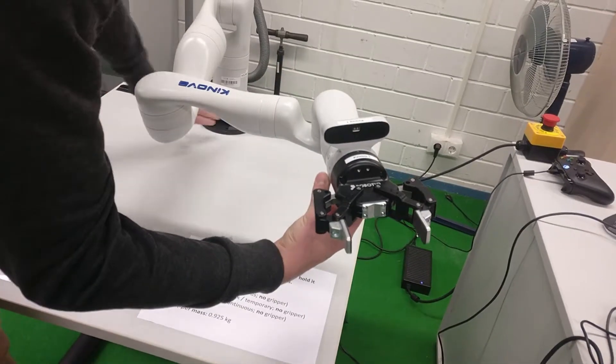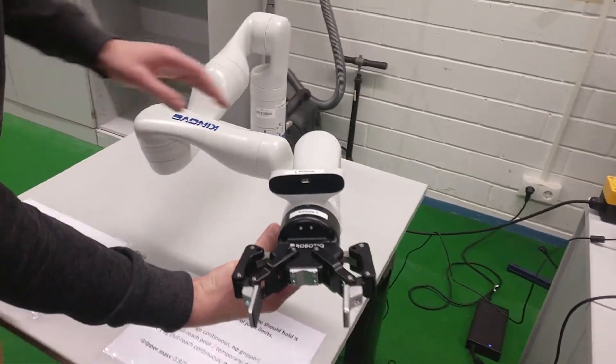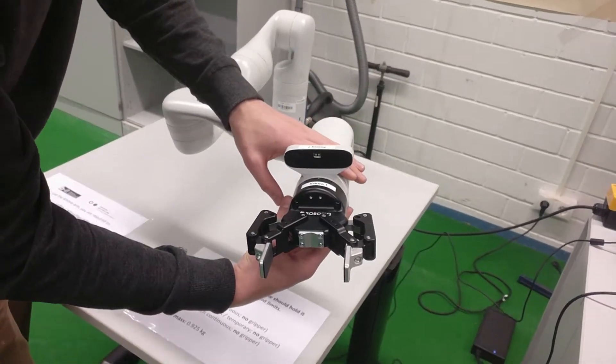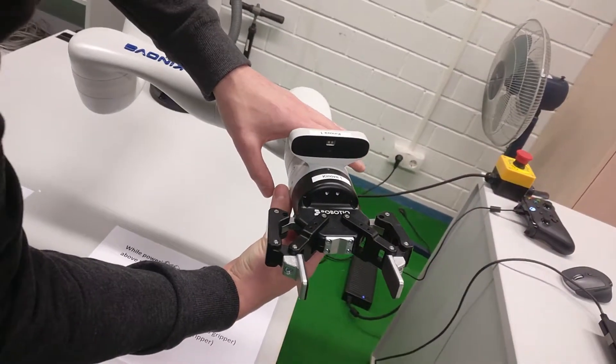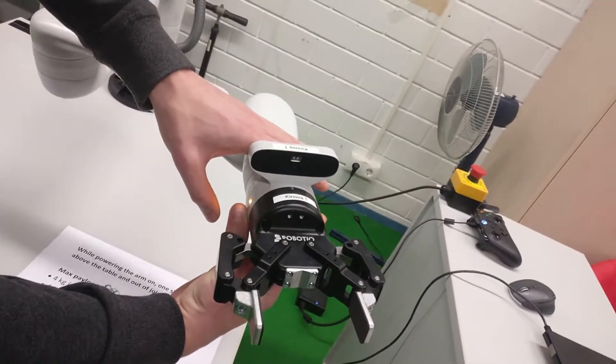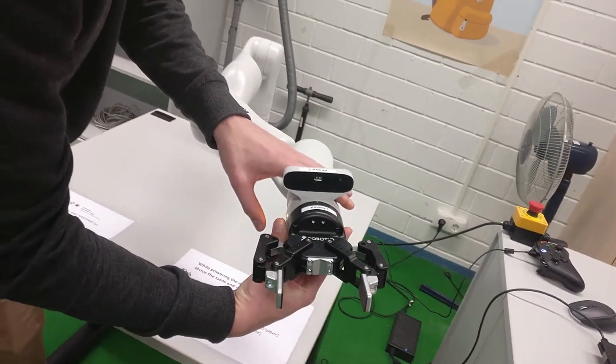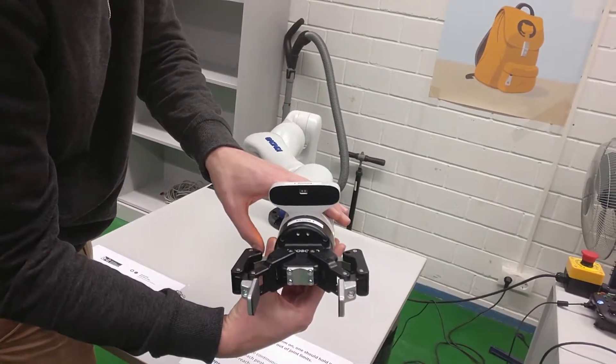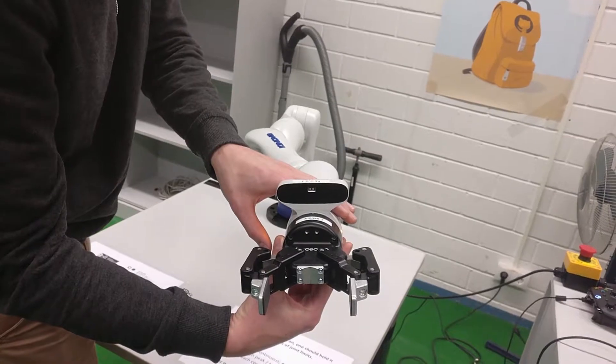In the controller in the base, there is singularity detection and joint lock detection to make sure you don't put it in any states that could damage the robot. So a demonstration of this is if you try and pull out, it will lock itself up to stop singularities.